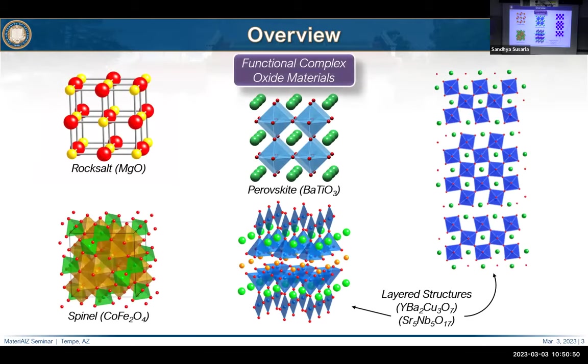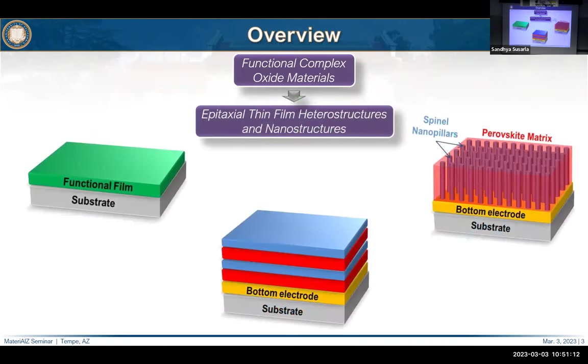So let's jump into things. I feel it's often useful to start these kinds of presentations with a little bit of an overview and a scientific philosophy — where are we coming at this work from? In my group, we are primarily interested in these functional complex oxides. Besides having very pretty crystal structures, they have lots of really interesting properties, and by tuning the different atoms inside these materials you can pretty much access any type of property you might want to play with. We like perovskites, but we work on other materials as well. We synthesize these things as epitaxial thin film heterostructures and nanostructures — everything from a single layer thin film to a multilayer heterostructure or superlattice, even sometimes self-assembled nanostructures.